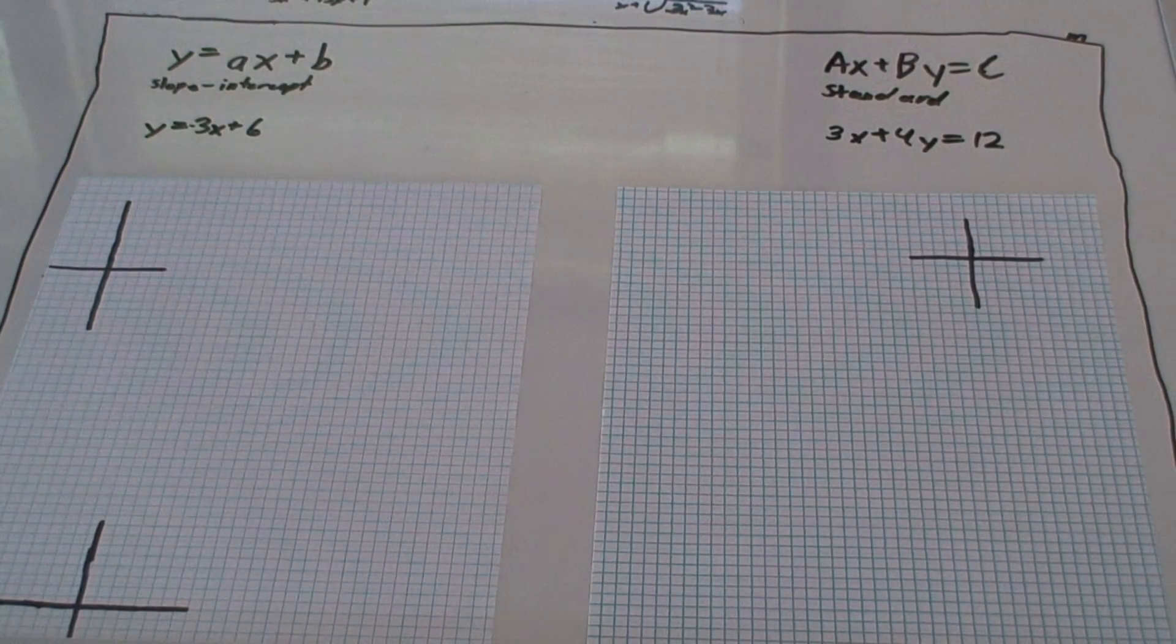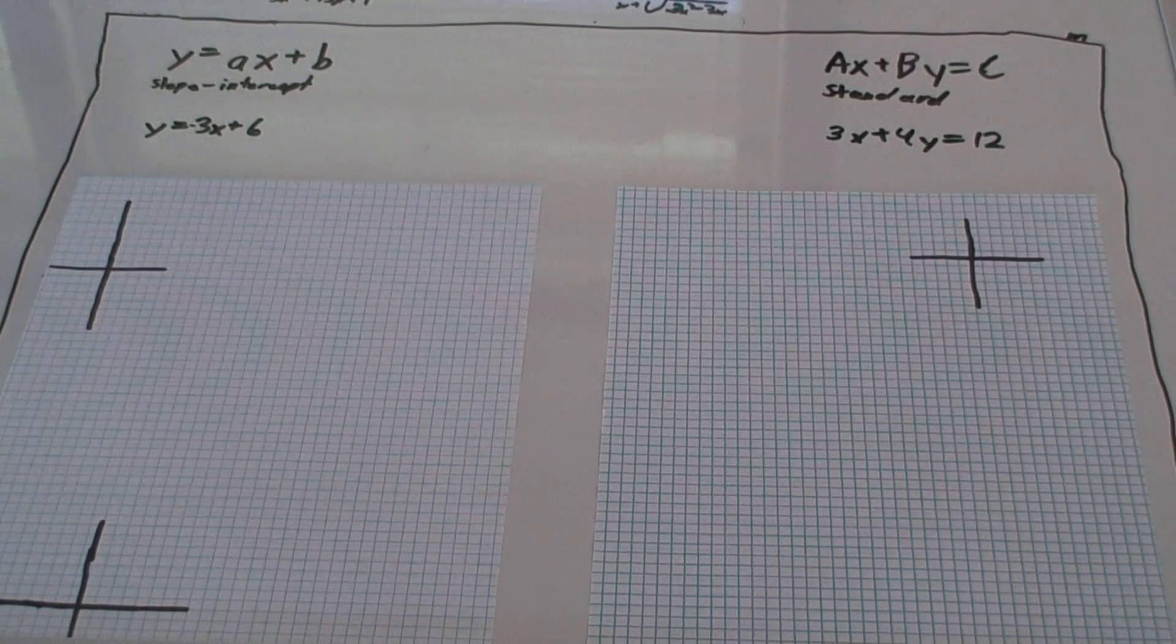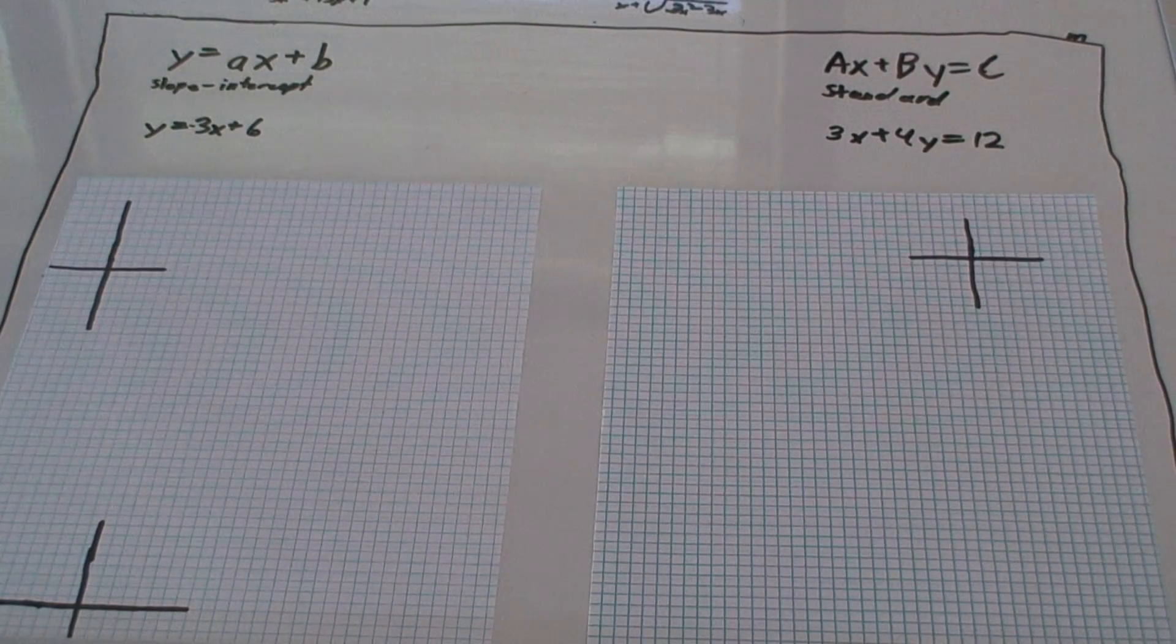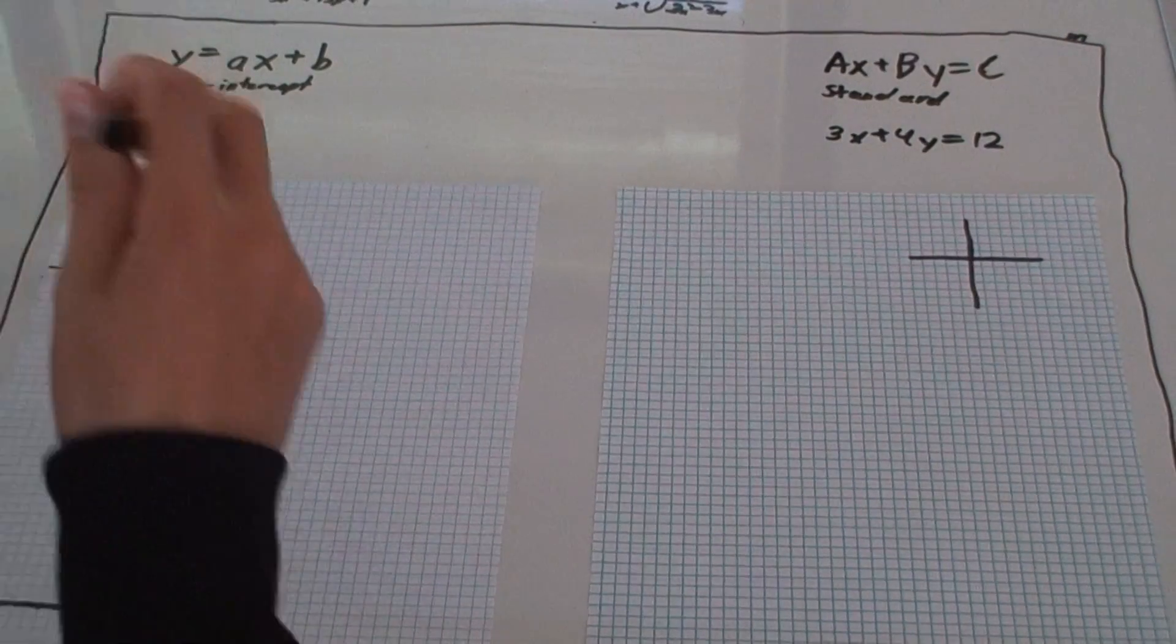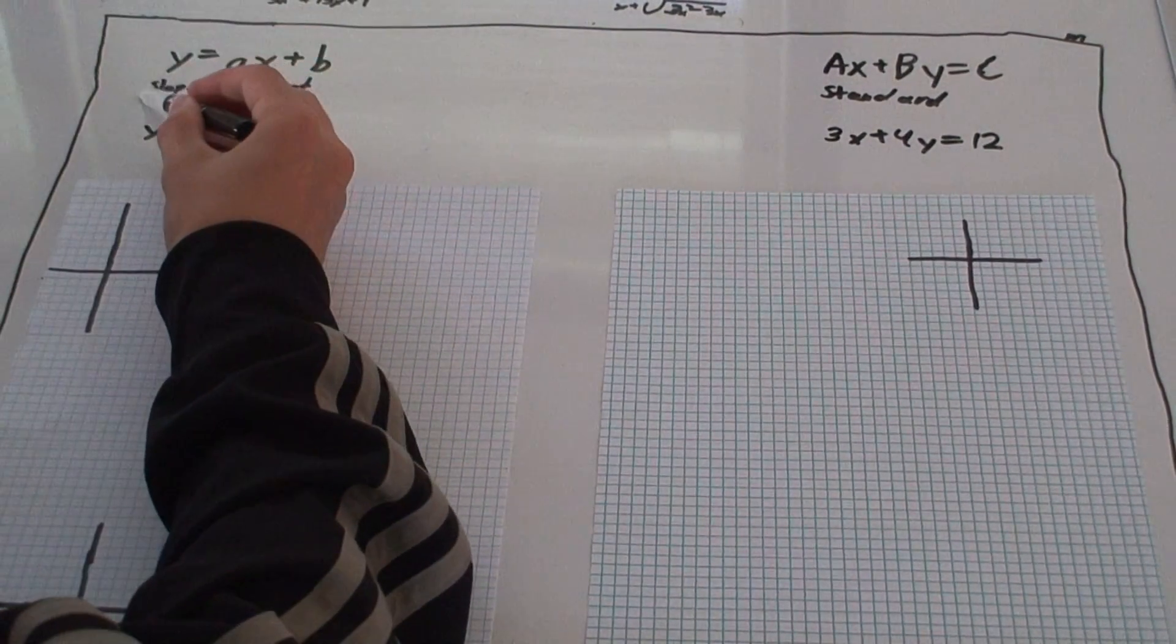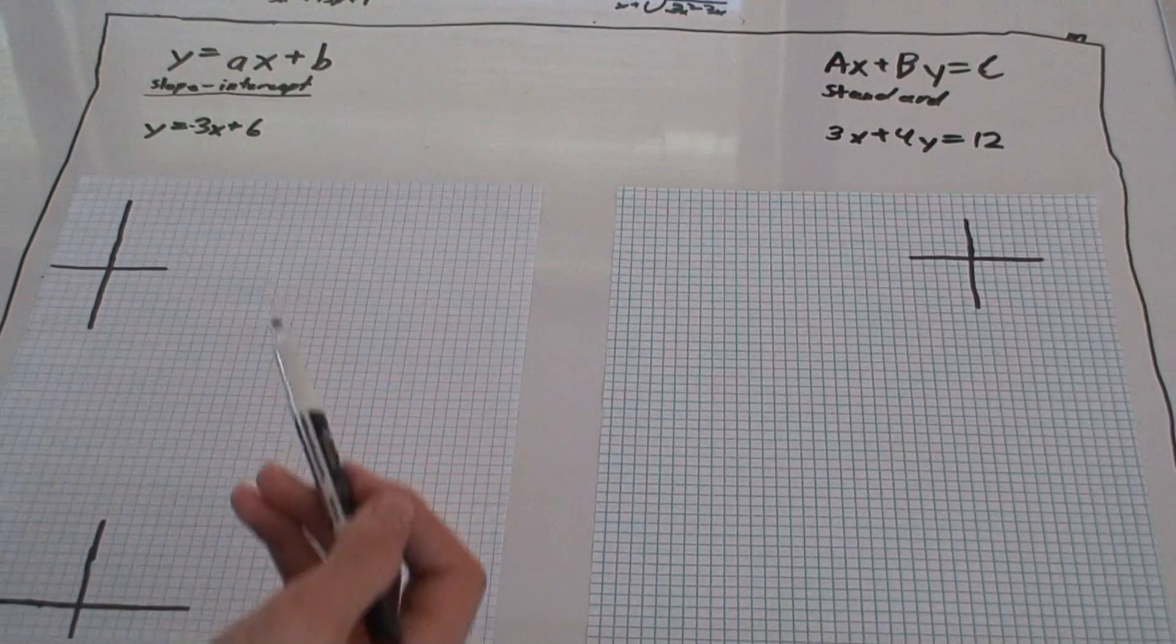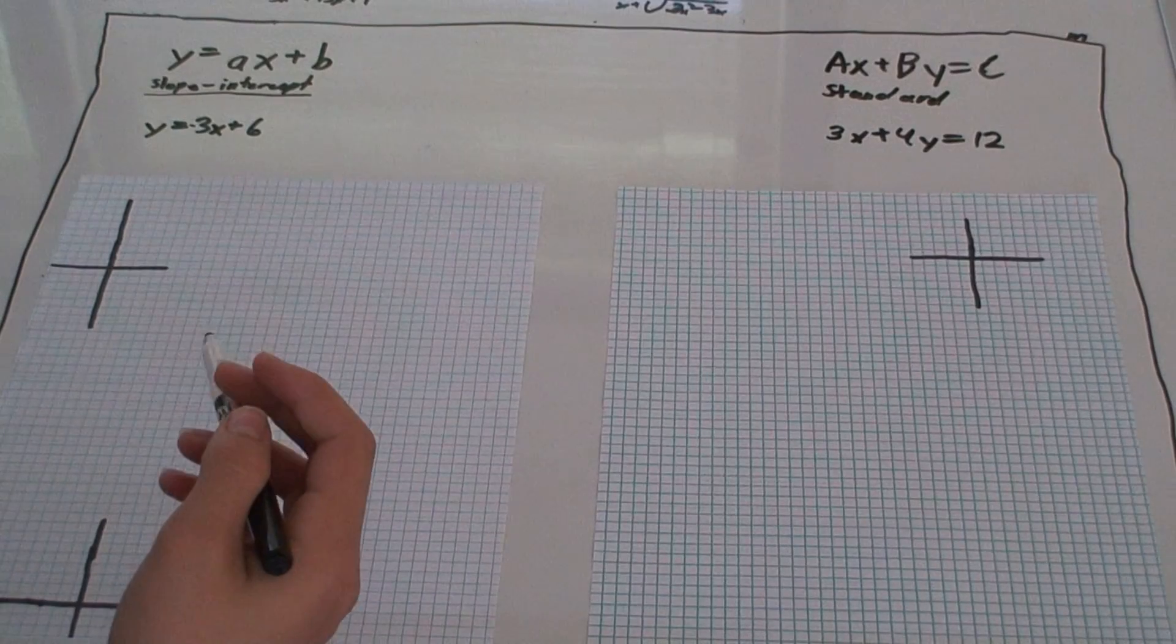Okay, this is all about slopes and the different equations that you can use to find those slopes. This form over here is what's known as a slope-intercept form. It allows you to easily find the slope and the y-intercept.